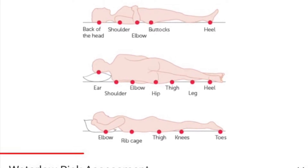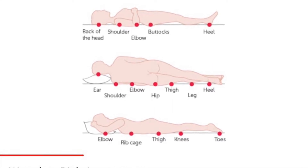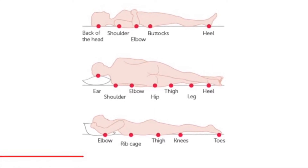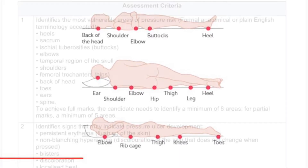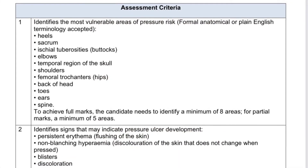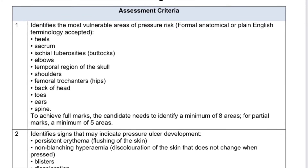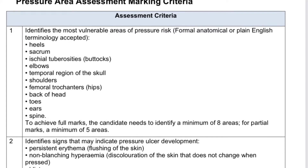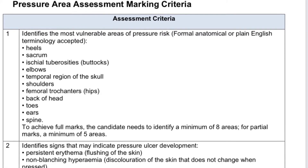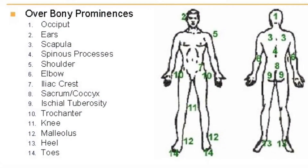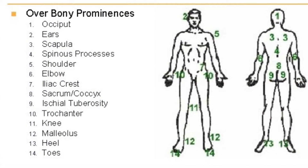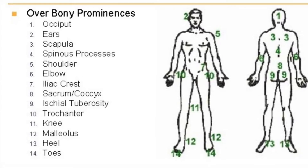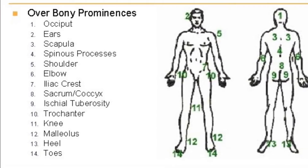First, let's go through the assessment criteria. The first thing is to identify the most vulnerable areas of pressure risk. You can use the pressure risk area names in formal anatomical or plain English terminology — both are accepted.